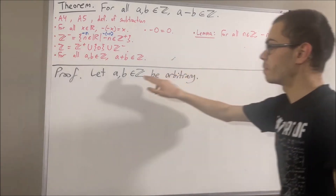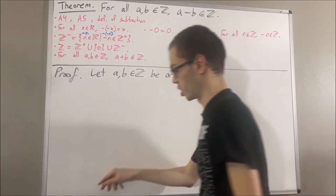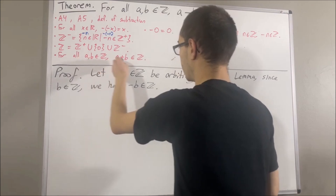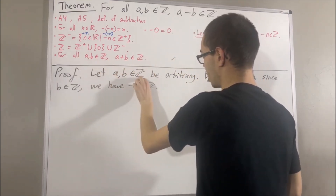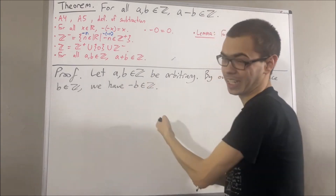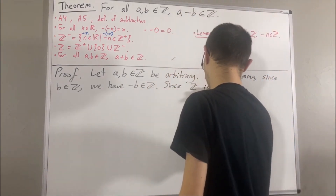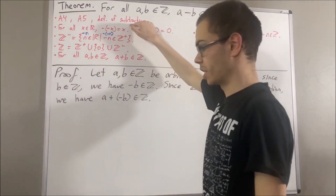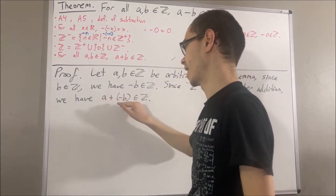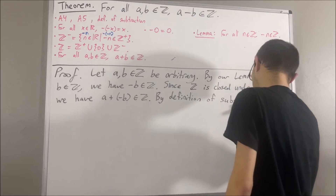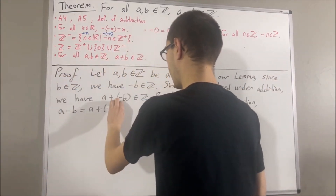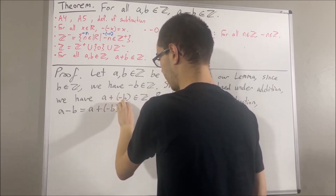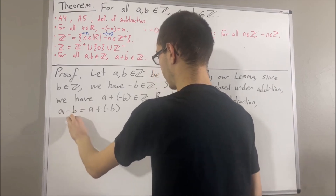By our lemma, since b is an integer, that tells us that negative of b is an integer. Then, using the fact that the integers is closed under addition, since a is an integer and negative of b is an integer, that tells us a plus negative b is an integer. By definition of subtraction, a minus b is a plus the negative of b. So since a plus negative b is an integer, this equation tells us we can substitute a plus negative b with a minus b. So we have a minus b is an integer.